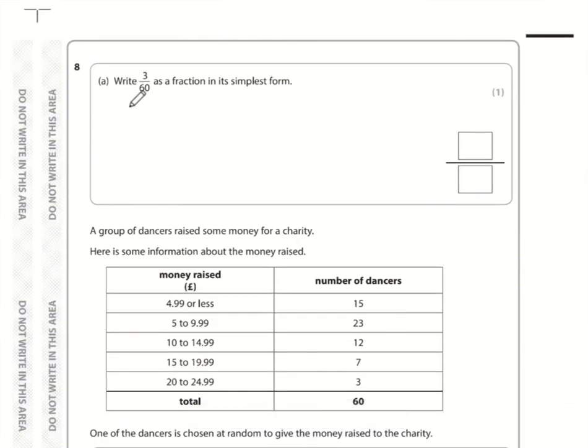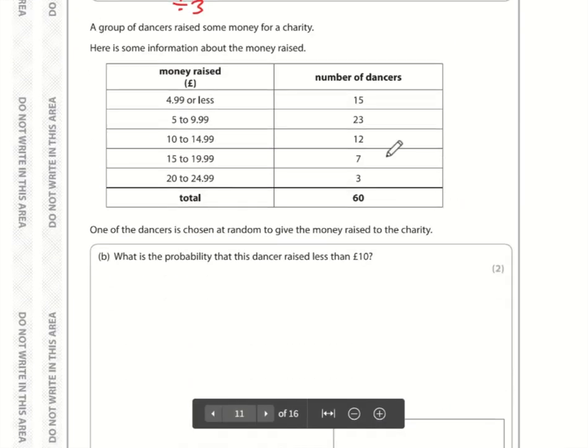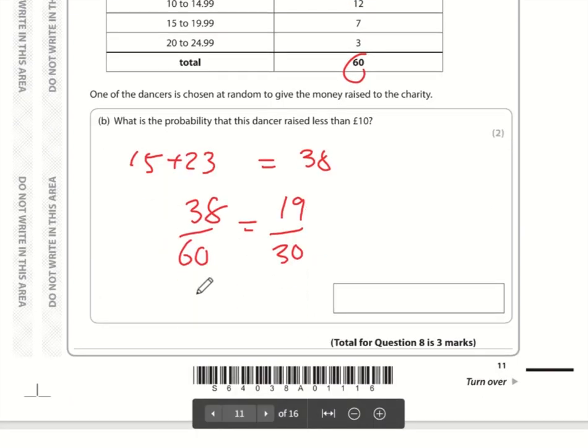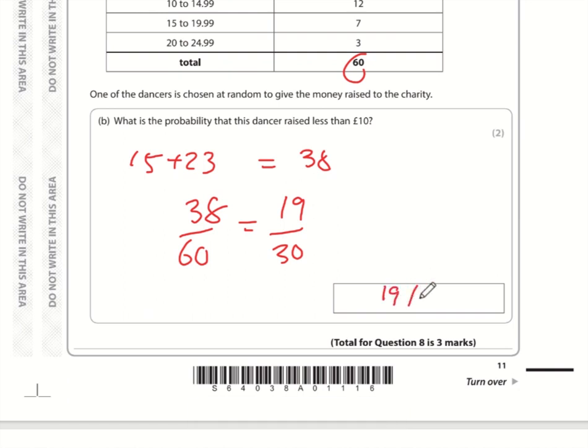3 out of 60 as a fraction in its simplest form. Both 3 and 60 can be divided by 3. 3 divided by 3 is 1, 60 divided by 3 is 20. So 1 over 20. What is the probability that the dancer raised less than £10? Less than £10 is 15 plus 23, which is 38. So that is 38 out of 60. This fraction can be simplified. Divide top and bottom by 2, get 19 over 30.